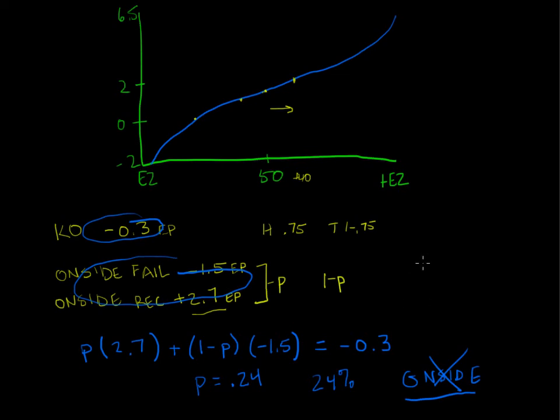So that's just one application of expected points. Obviously fourth downs is a big one. Penalty acceptance and declining, that's a big one. There are all kinds of applications. The biggest probably is simply valuing play outcomes. Just like we started the discussion with a run versus pass discussion, EP takes into account all kinds of all events on the field, takes into account penalties, takes into account scores, takes into account turnovers, gains and losses, and so on. So that's what, that's what EP is. That's what expected points is. And that's, those are some of the applications that can be used with it. So that wraps up our first discussion on expected points.